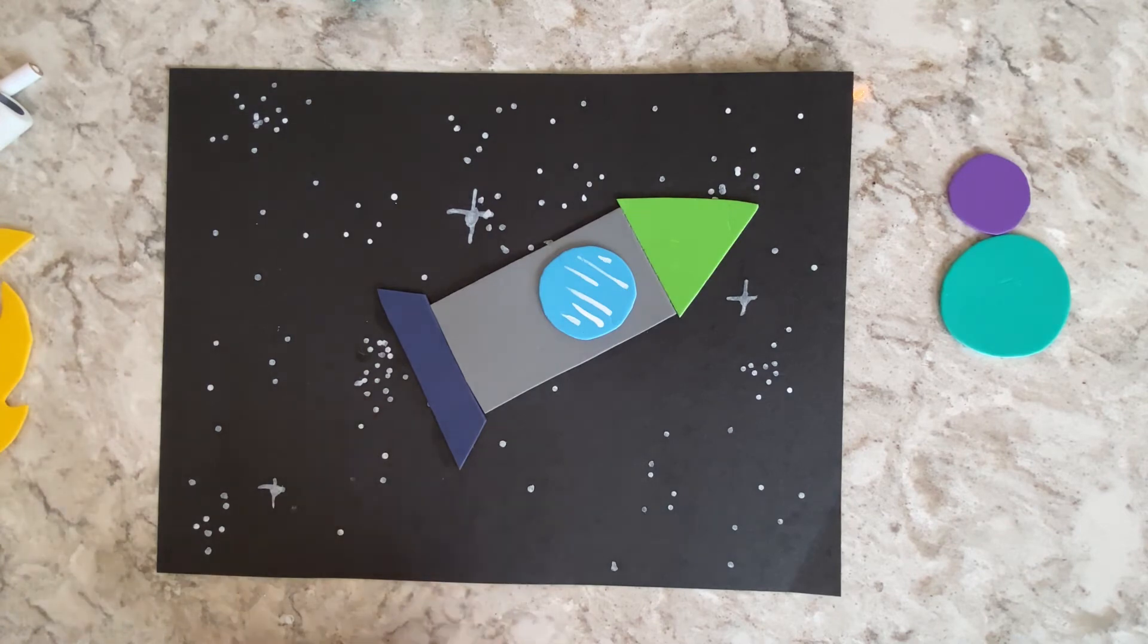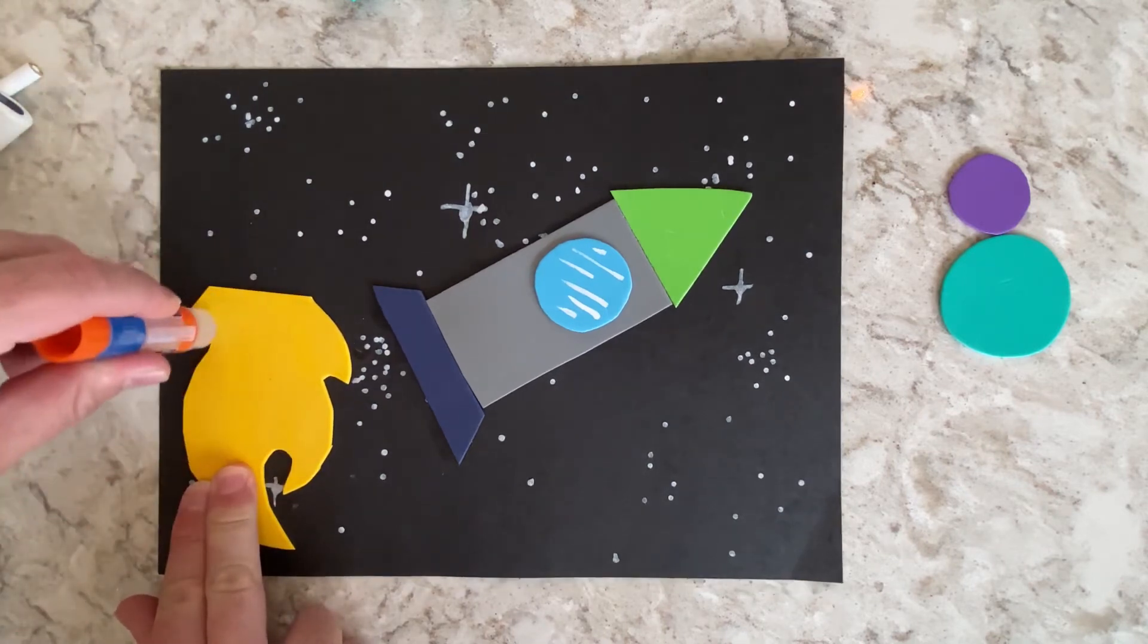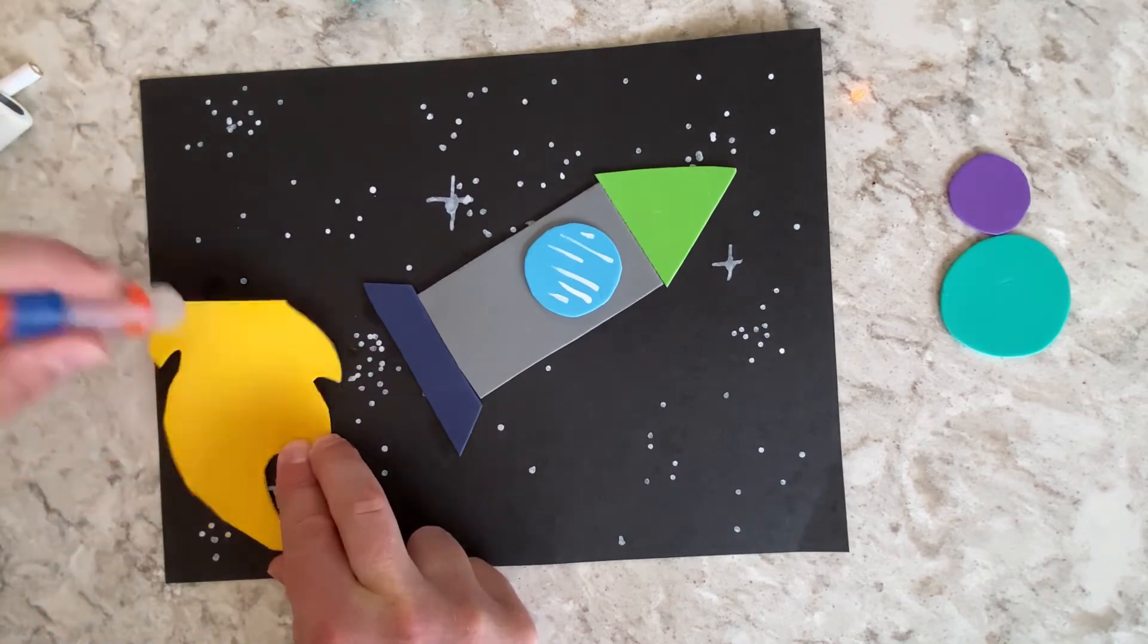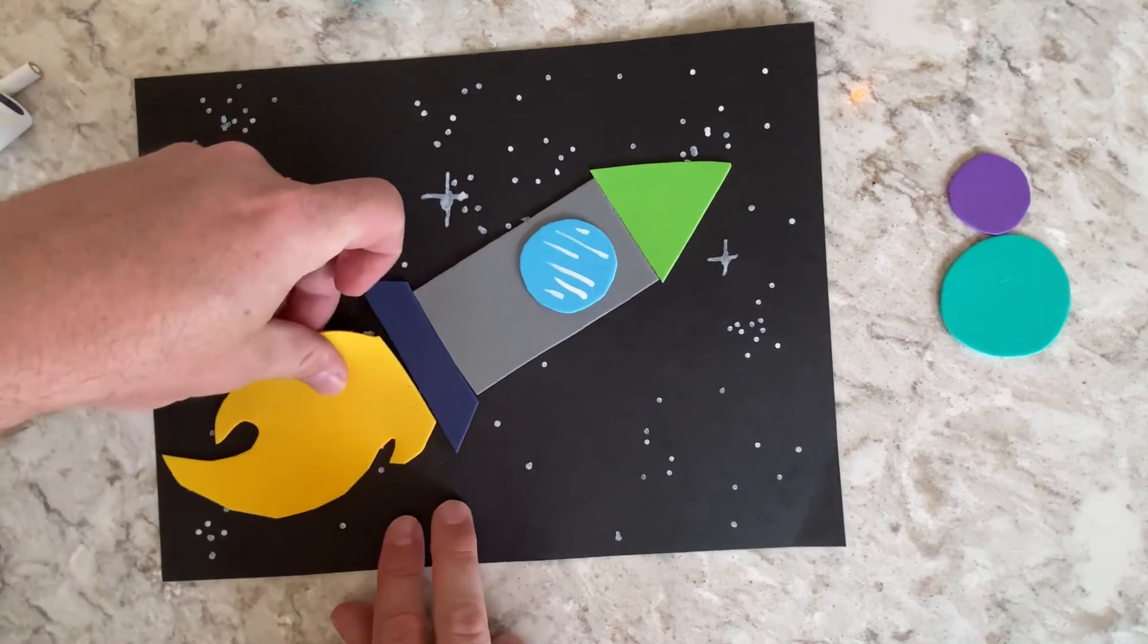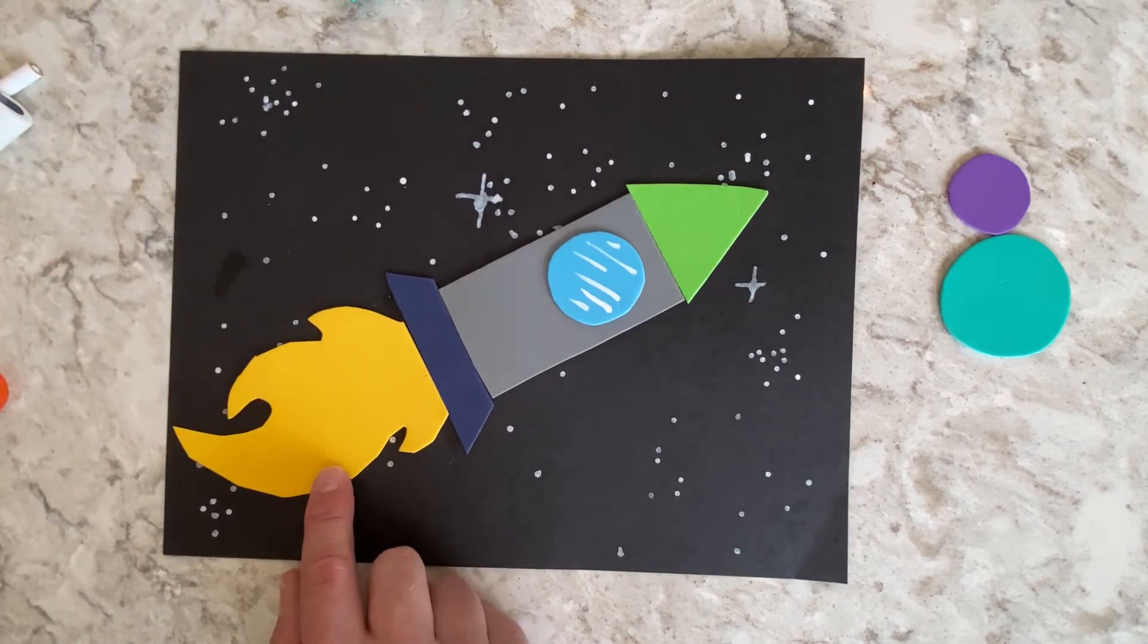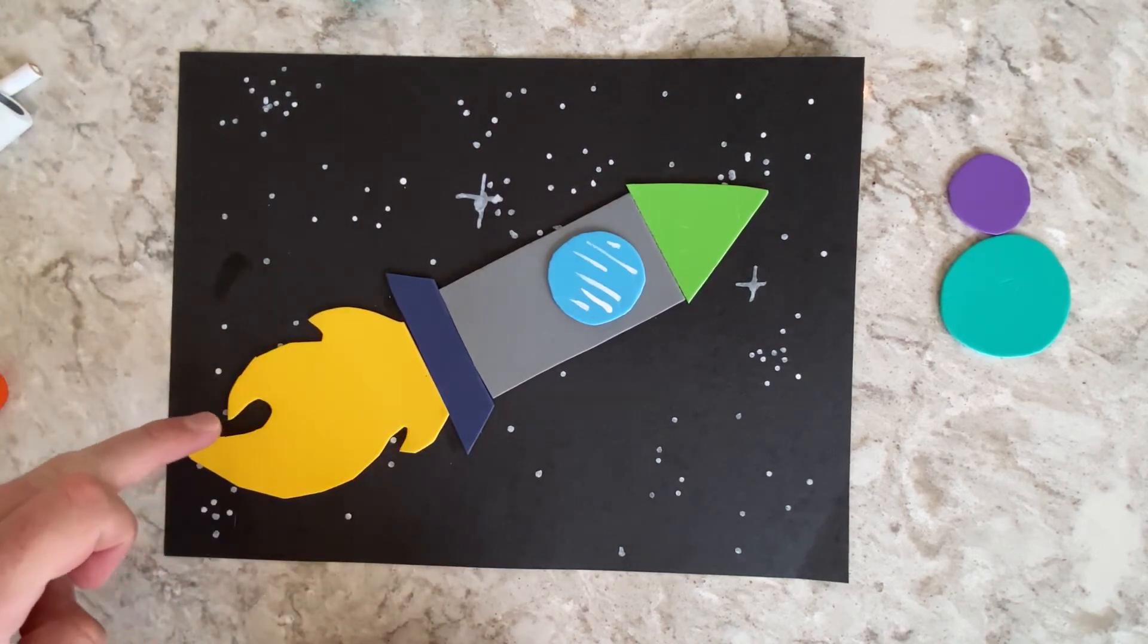Now, the cool part about this art project, in my opinion, is the fire that comes out of the back of the rocket. We're blasting out into outer space. So, we're going to put the main piece down. Now, when you make this, think of a leaf. Think of a leaf, and don't be afraid to make lots of sharp turns and cuts with your scissors.